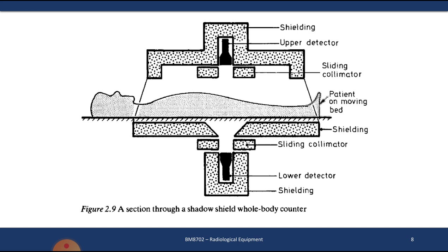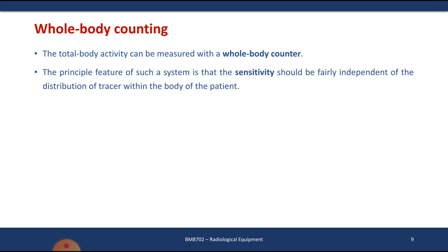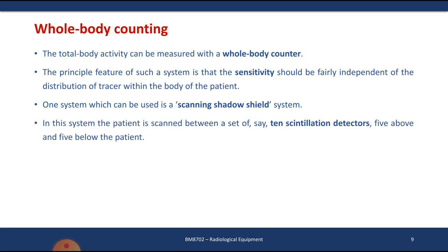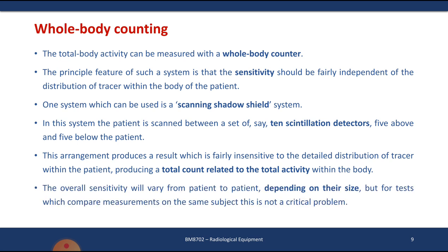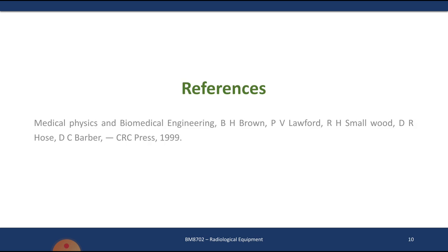The fourth application is the whole body counter, which measures the total activity of the body. Its principal feature is that sensitivity should be independent of the distribution of the tracer within the patient's body. It has a scanning shadow shield system with around 10 scintillation detectors — five above and five below — detecting radioactivity throughout the body. However, sensitivity can vary depending on the patient's body size, for example between an obese adult and a small child. These topics can be referred to further in the BH Brown textbook.